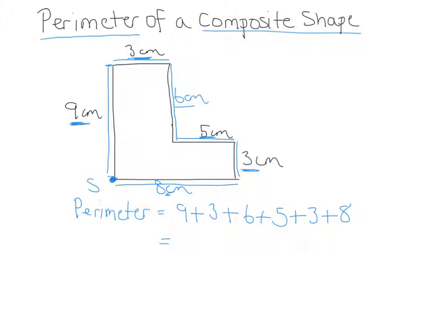So, let's see. 9 plus 3 is 12, plus another 6 is 18, plus another 5 is 23, plus another 3 is 26, plus another 8 is 34. So, the perimeter is 34 centimeters.